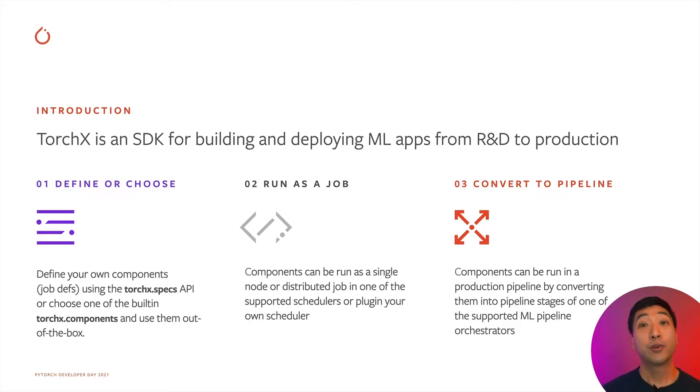Hello, my name is Kyuk Chung. I'm a software engineer in PyTorch's research to production, otherwise known as the R2P team. Our main goal in R2P is to make PyTorch a delight to use in production. Today, I'm here to present a project called TorchX that we open sourced recently specifically for this purpose. In short, TorchX is an SDK for quickly building and deploying ML applications from research to production.